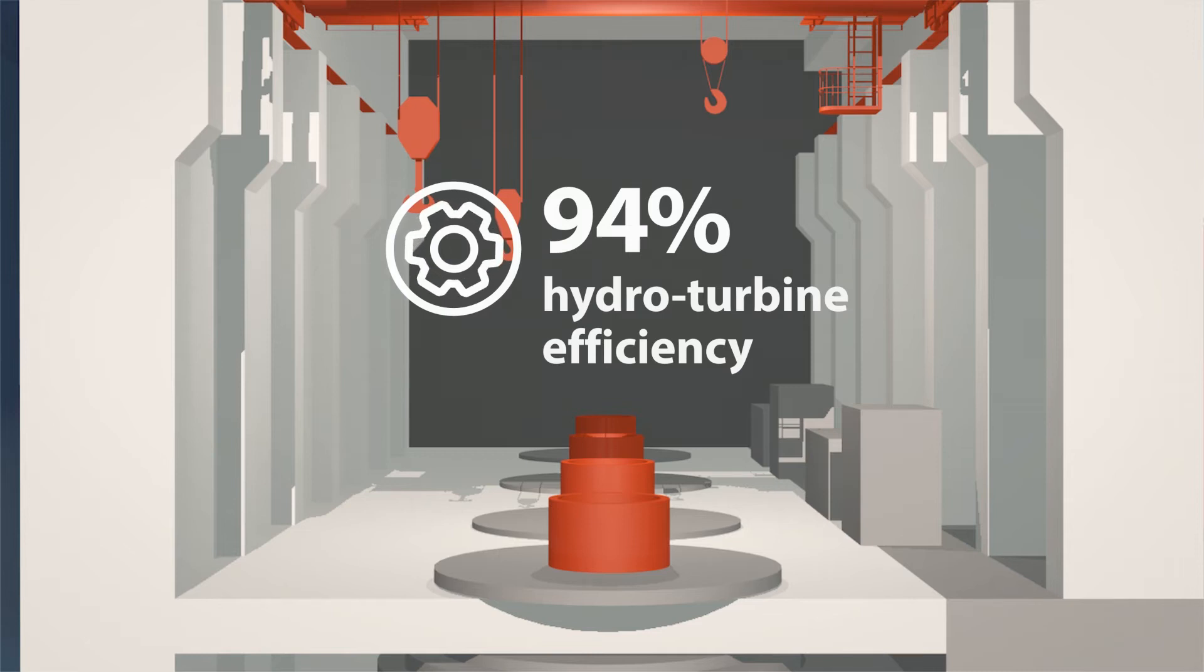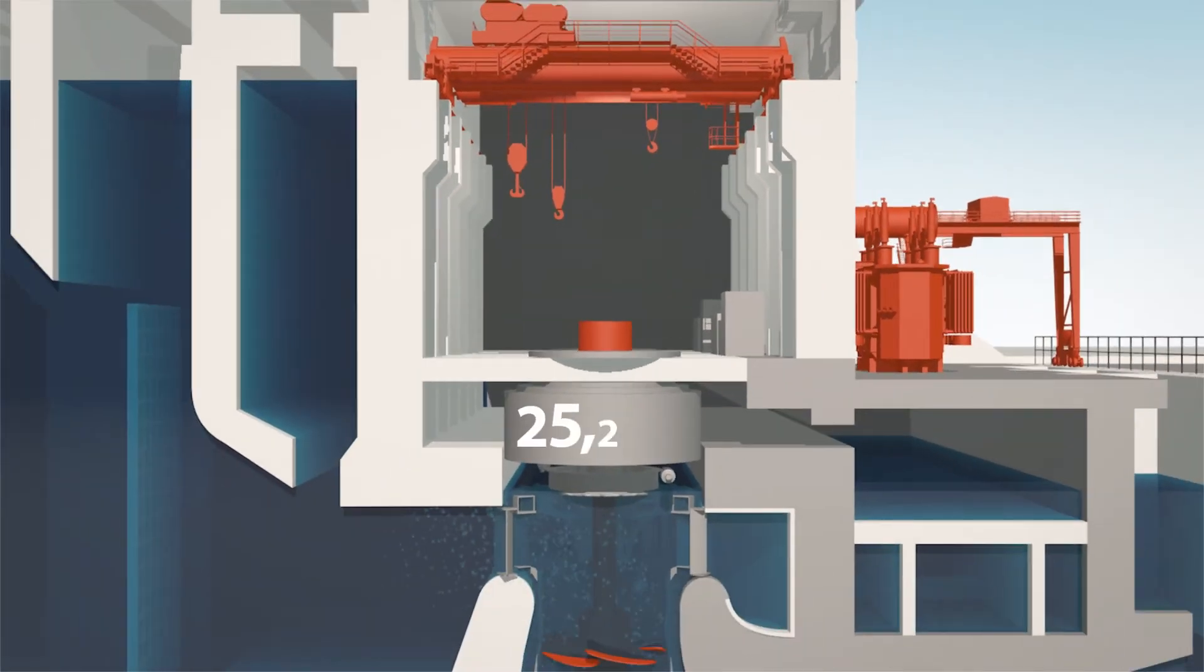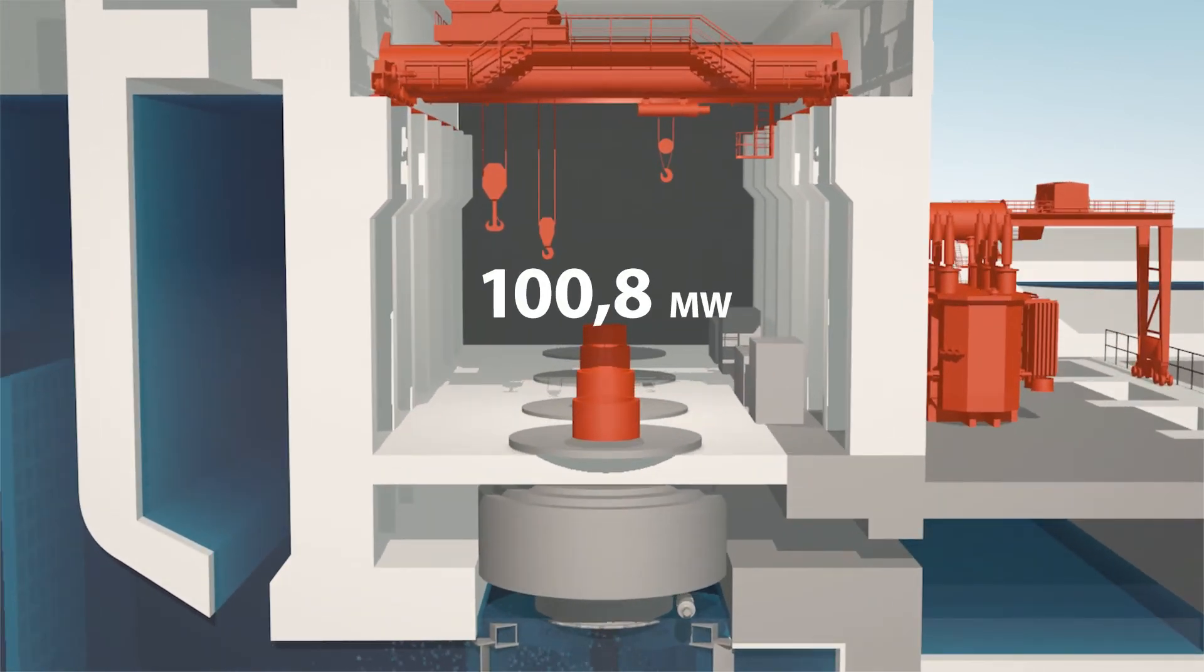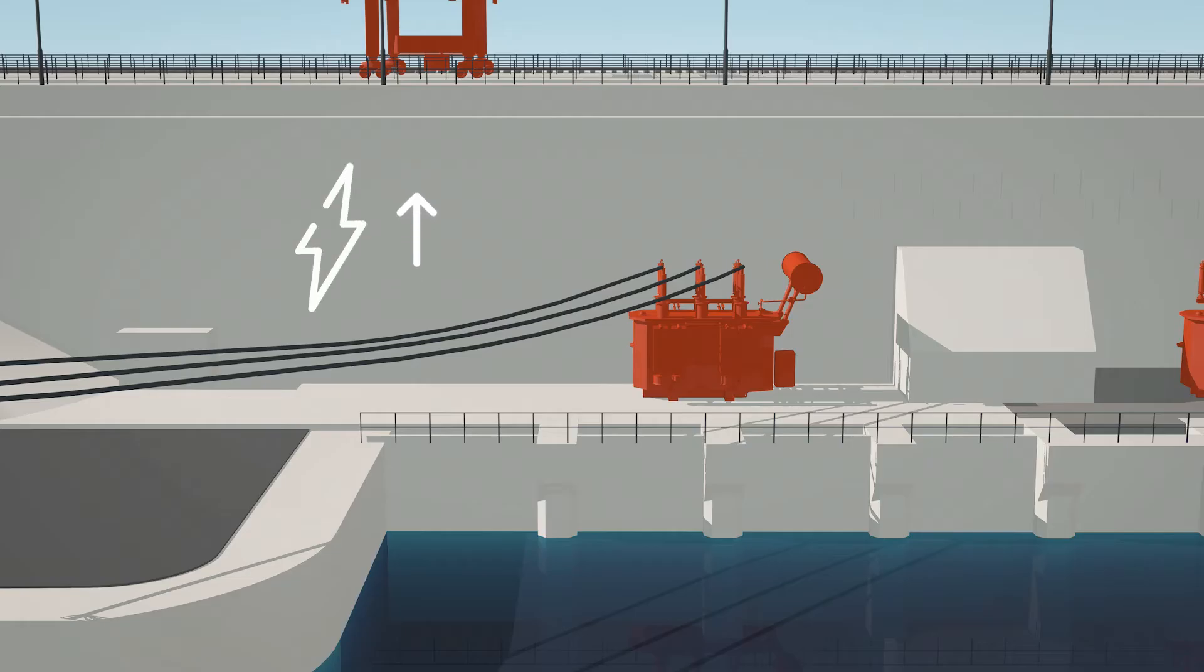The force of the water causes the turbines to spin, and this in turn causes the 25 megawatt generators to spin. The installed capacity of the hydroelectric plant is slightly more than 100 megawatts. Transformers alongside the plant increase the voltage of the energy that is produced, and then the electricity is transmitted to the grid.